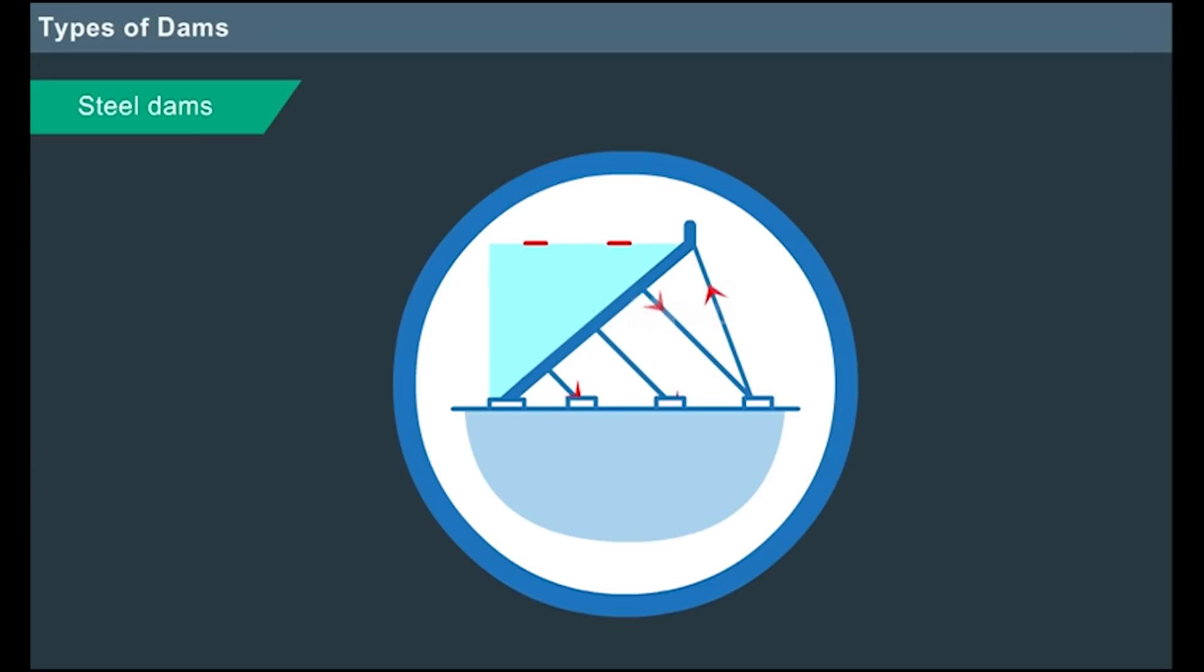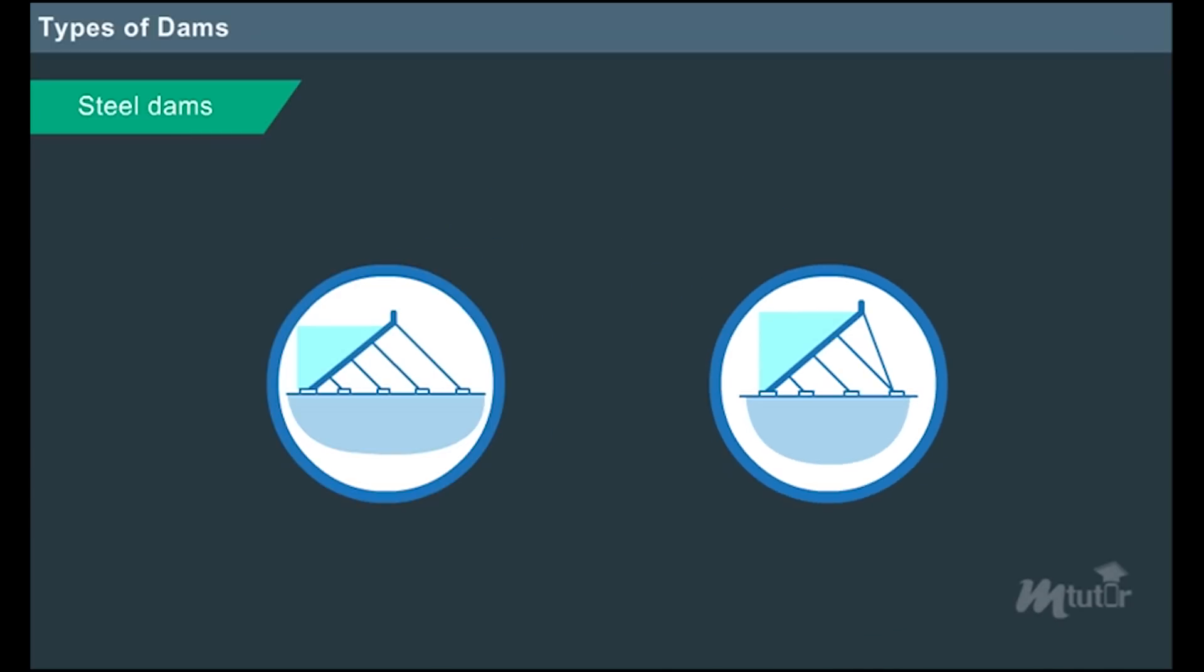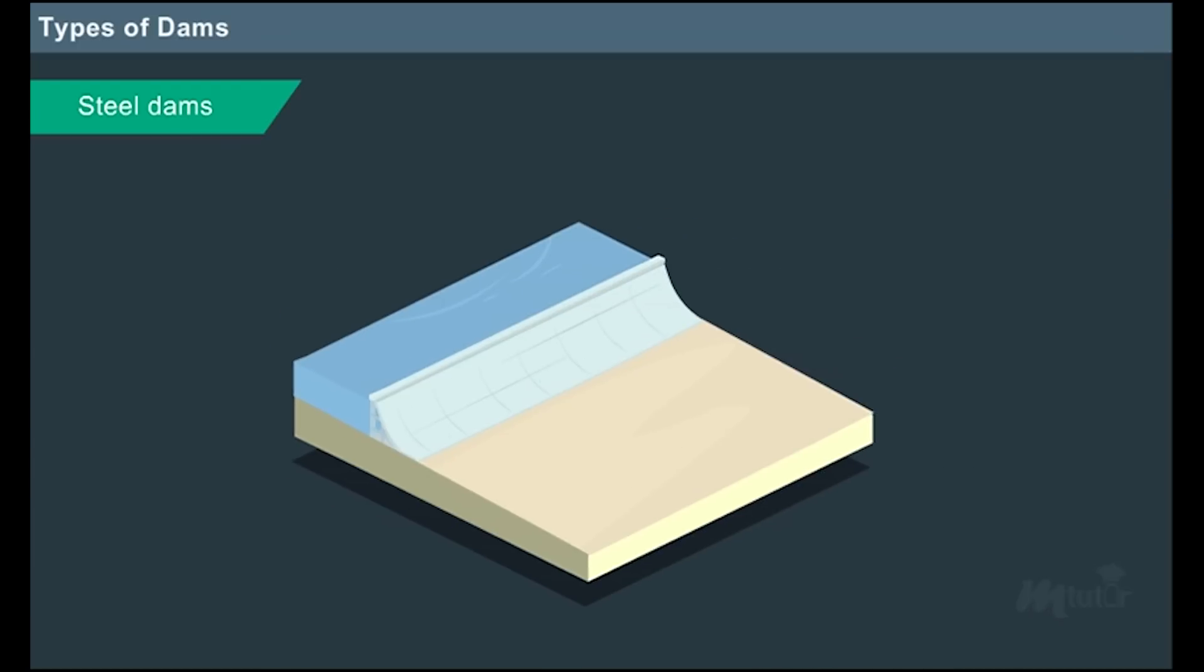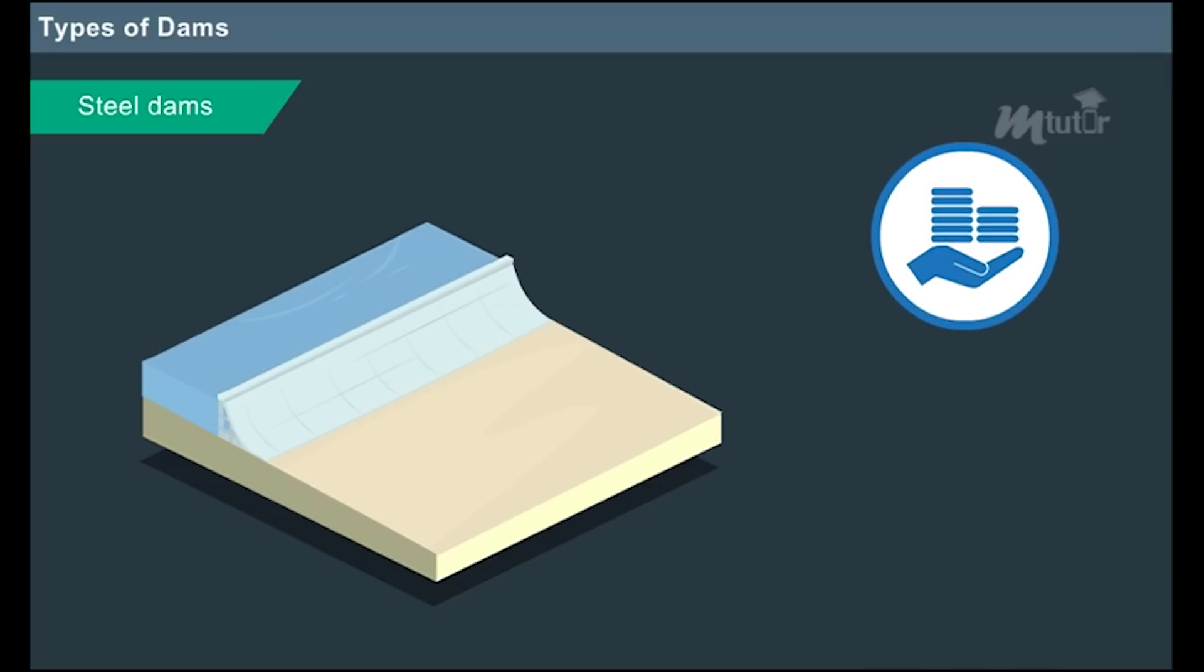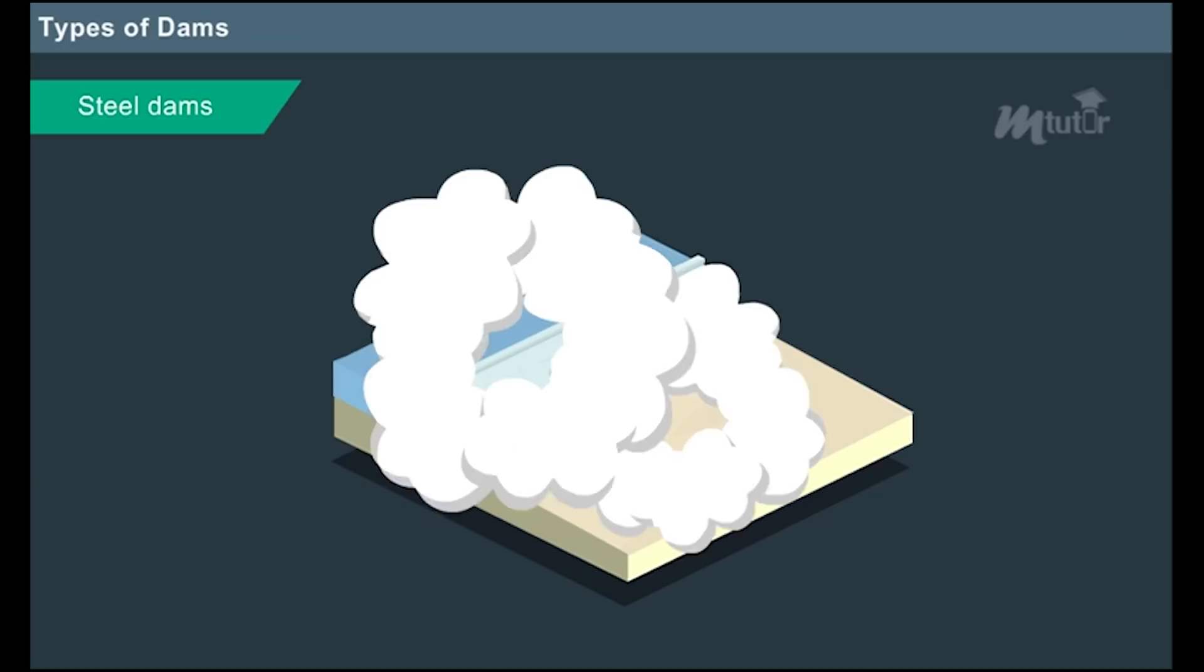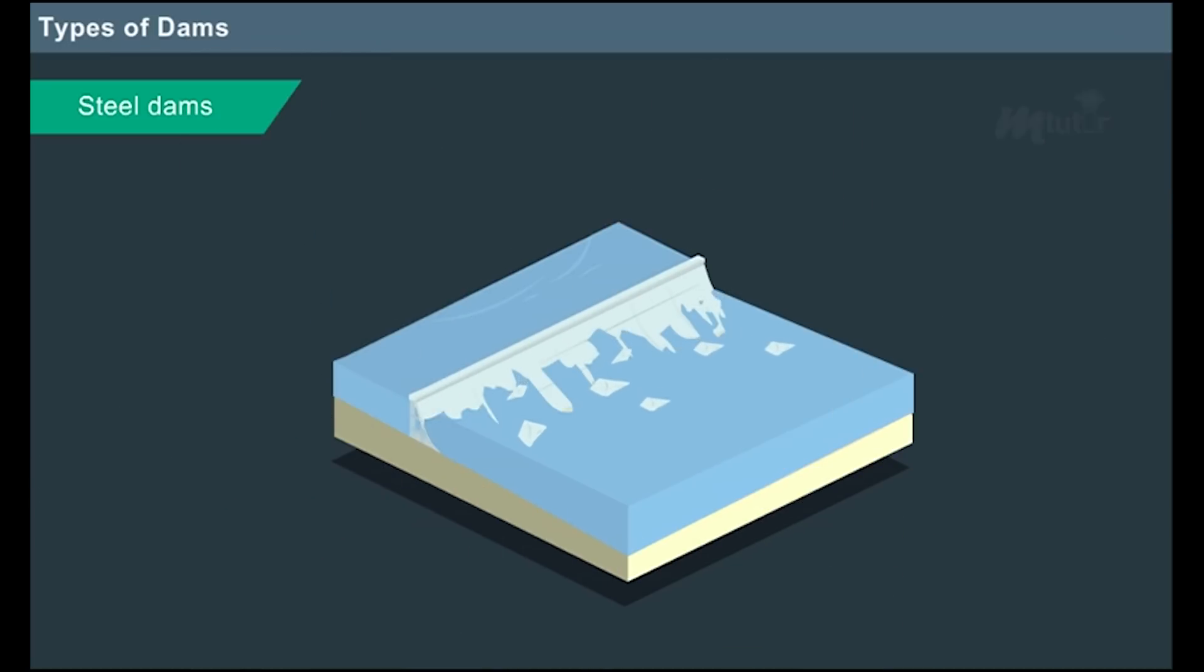To counteract the forces, deck girders are anchored to the foundation at the upstream toe. The major advantage of steel dam is that it is cost effective and involves quick and easy construction. However, this dam fails to absorb the shock from spillway. Moreover, the durability of steel is less when compared to concrete.